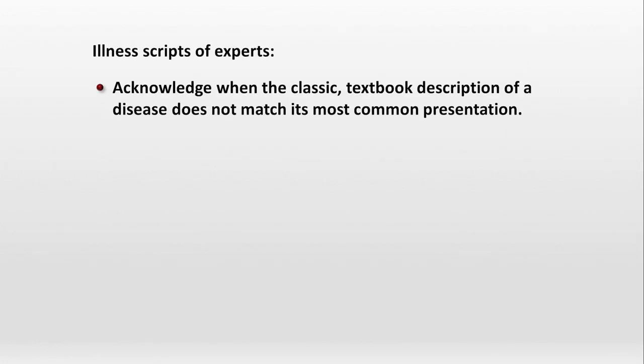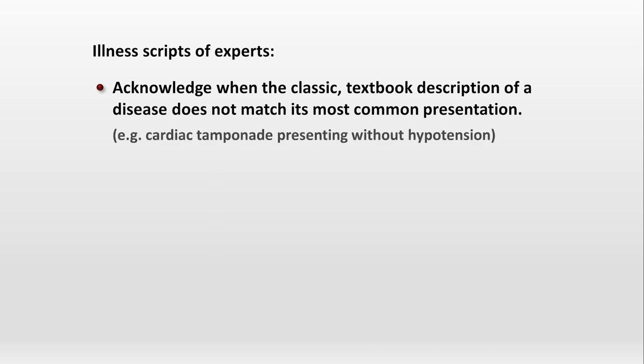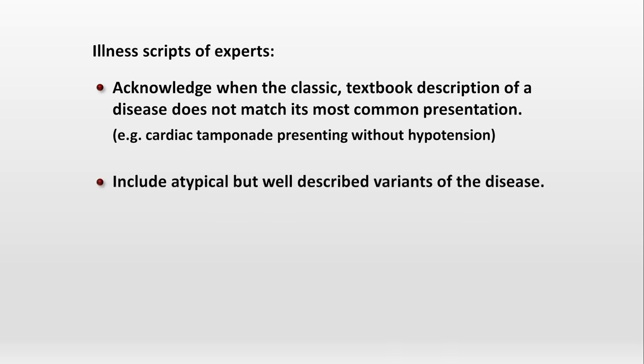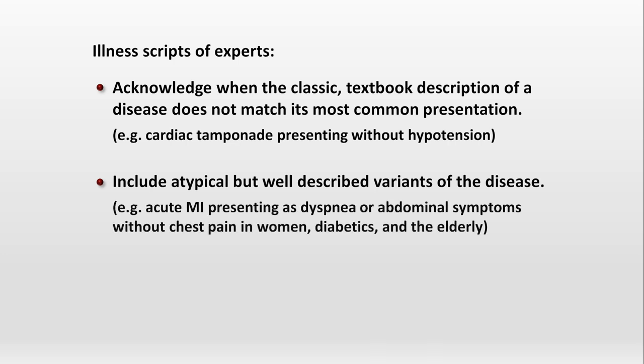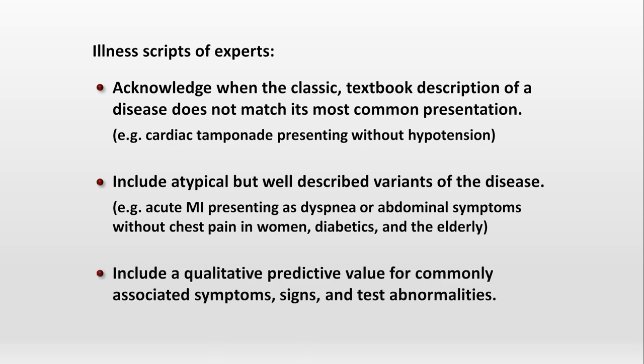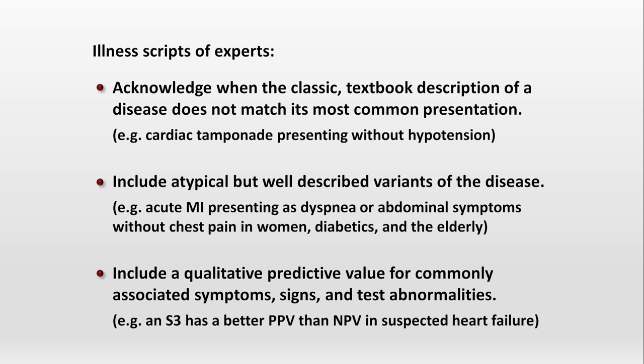Overall, an illness script is only as good as the information in it. When compared to novices, illness scripts of experts acknowledge when the classic textbook description of a disease does not match its most common presentation — for example, most patients with cardiac tamponade initially present without hypotension, unlike what's often described in textbooks. Scripts of experts include atypical but well-described variants of the disease, such as an acute MI presenting as dyspnea or abdominal symptoms without chest pain in women, diabetics, and the elderly. They also include a qualitative predictive value for commonly associated symptoms, signs, and test abnormalities — like knowing an S3 has a much better positive predictive value than negative predictive value in suspected heart failure.